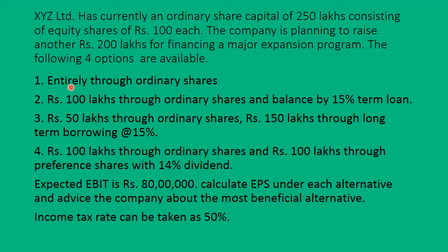What are the four options? First option is entirely through ordinary shares, i.e., equity shares. Second option is 100 lakhs through ordinary shares and balance 100 lakhs through a 15% term loan. Third is 50 lakhs through ordinary shares and 150 lakhs through long-term borrowings at 15%. Fourth option is 100 lakhs through ordinary shares and 100 lakhs through preference shares with 14% dividend.